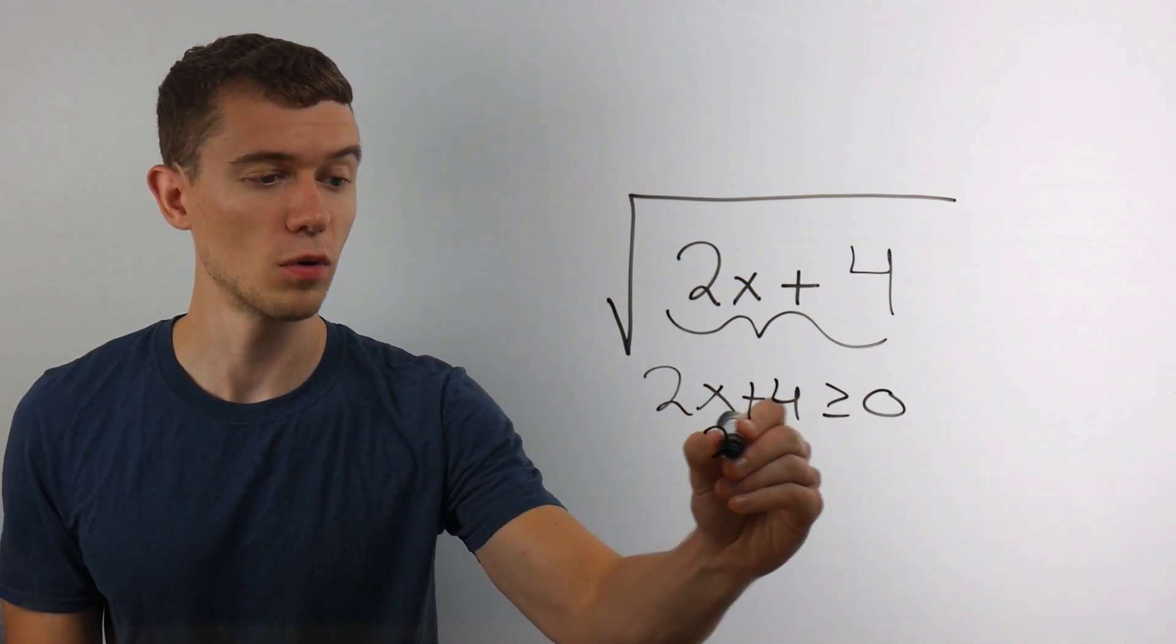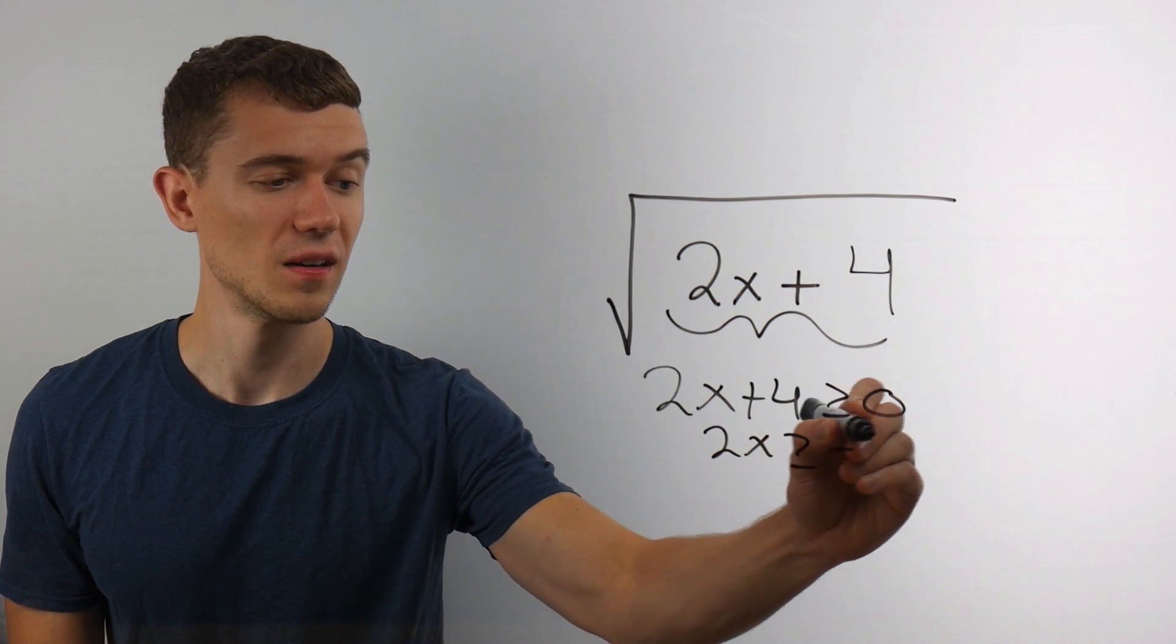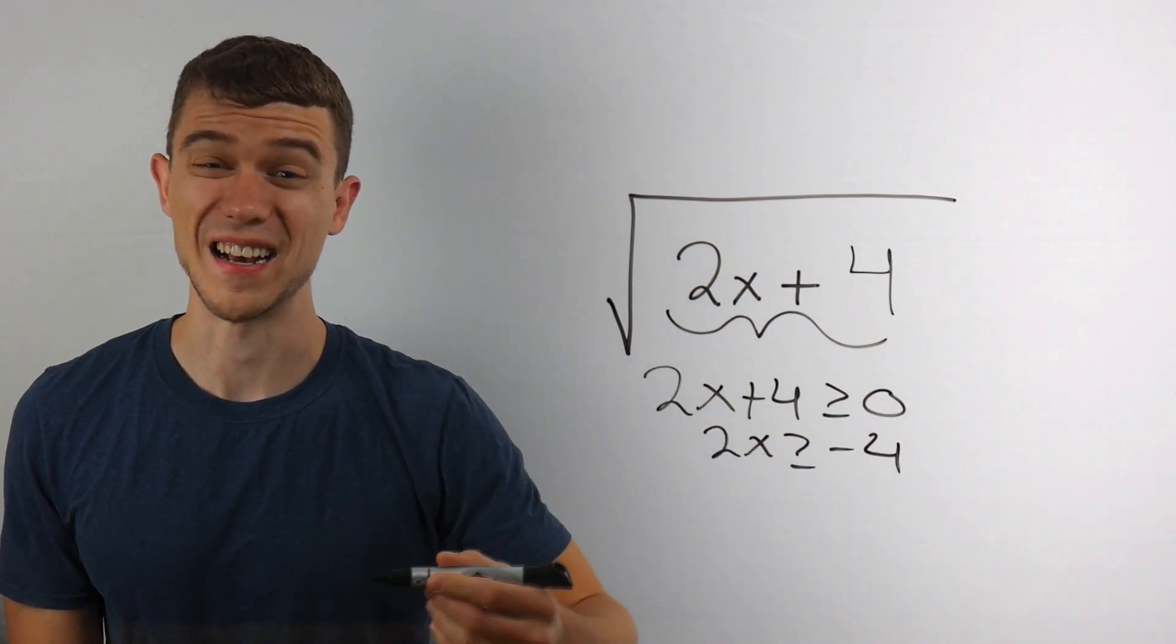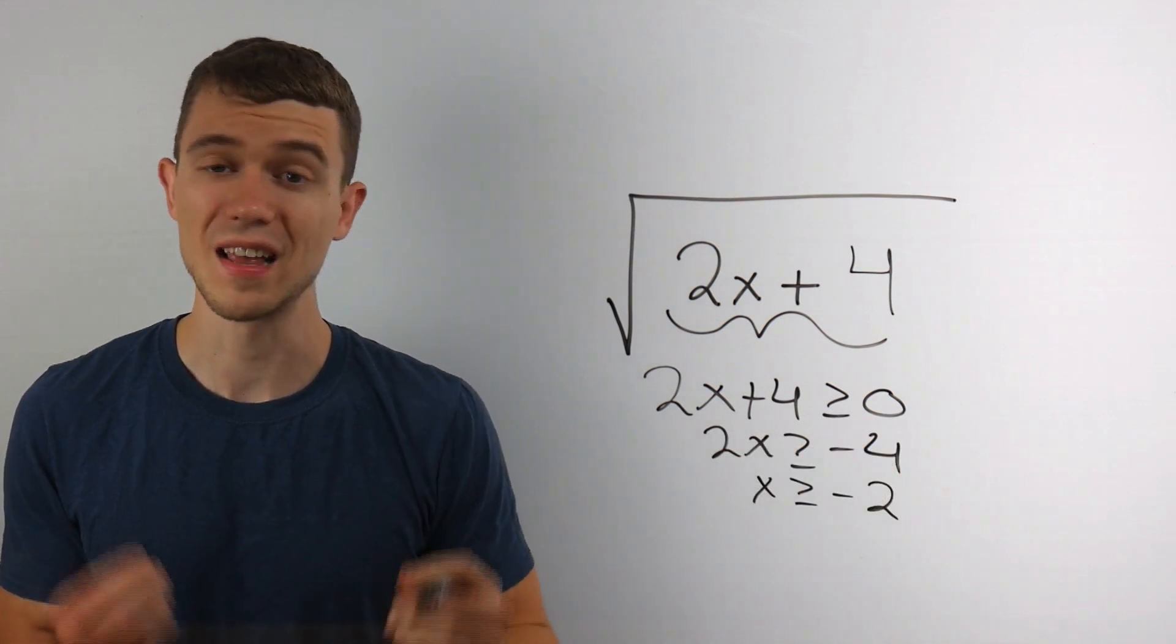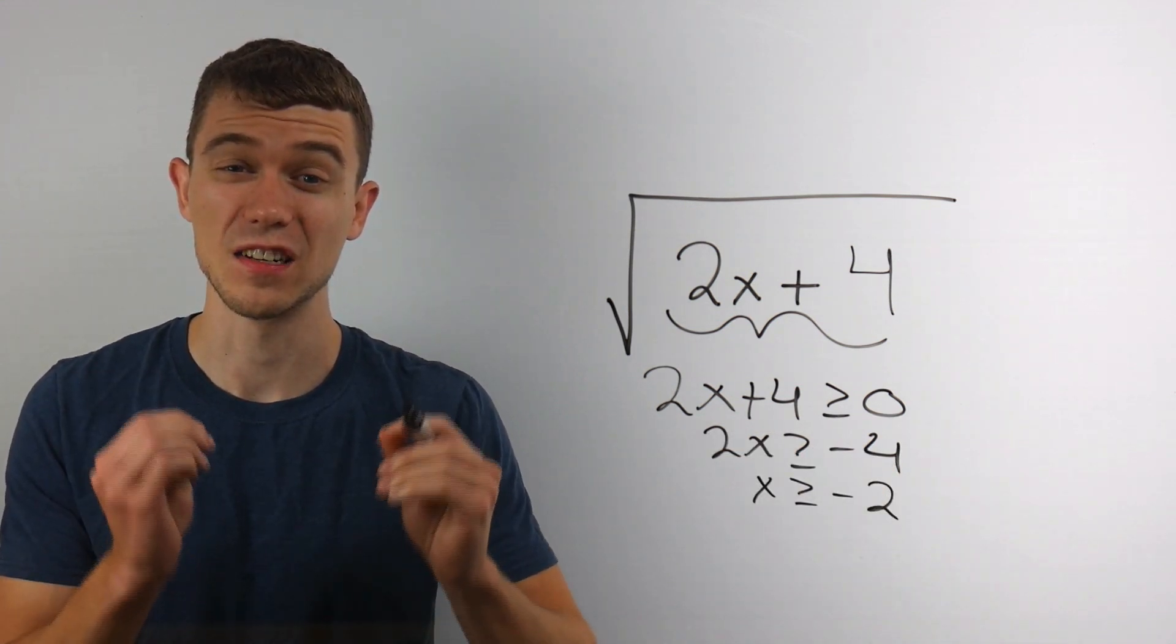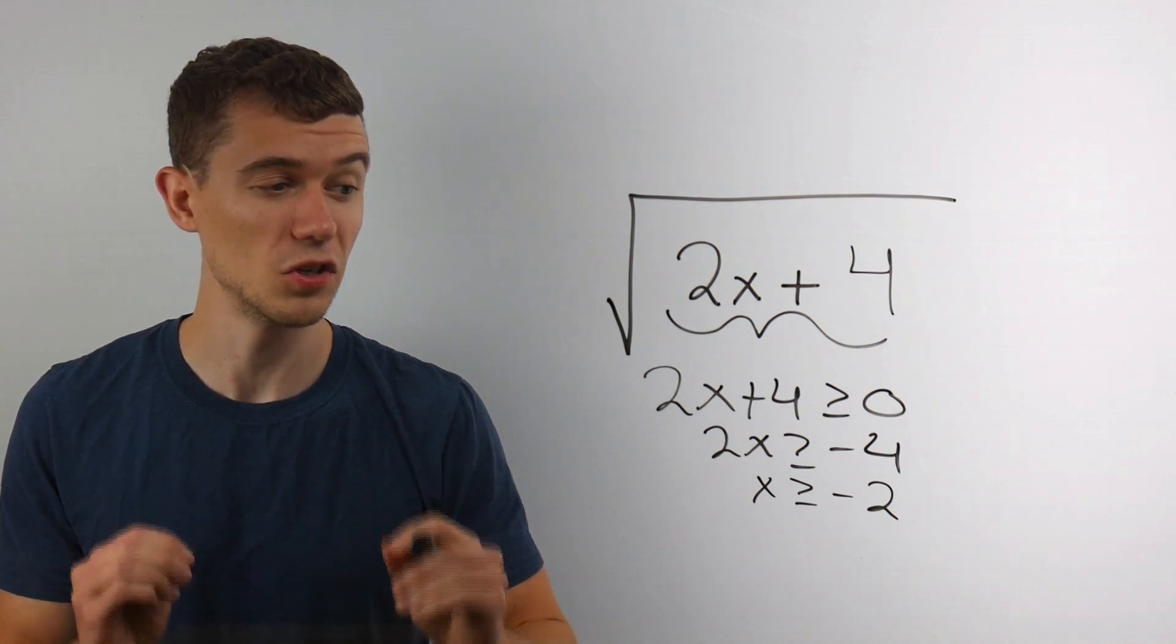So I can just subtract four from both sides here. And then to get X all by itself, we can just divide by two. And so it looks like the domain is X greater than or equal to negative two.